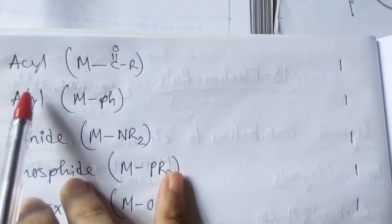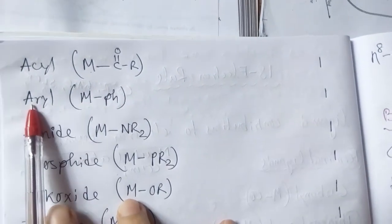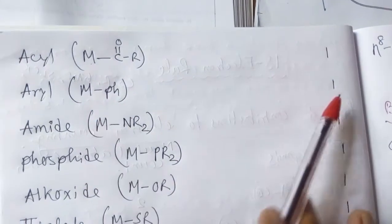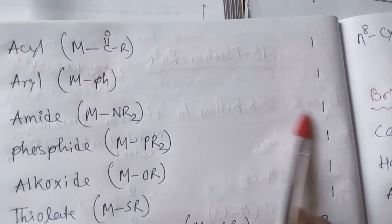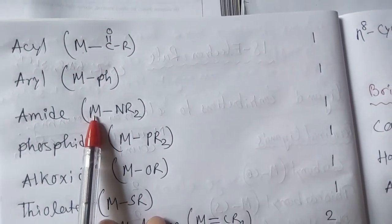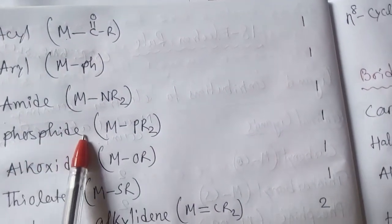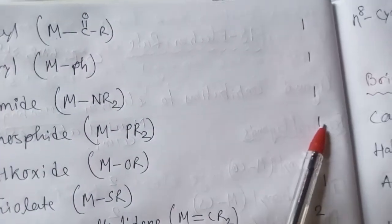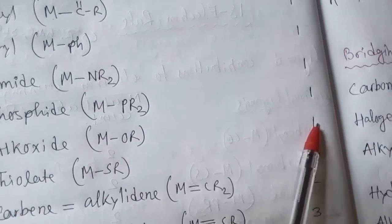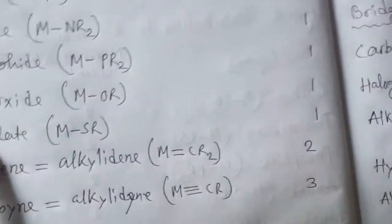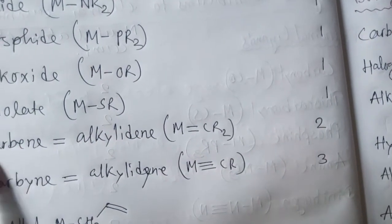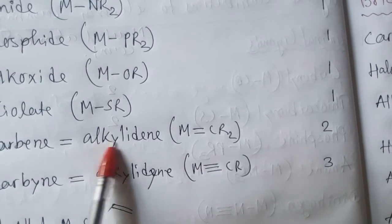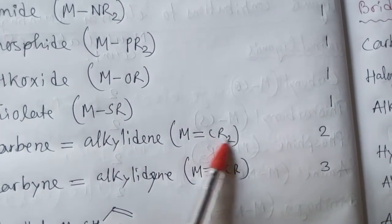Acyl is also one. Aryl is one. Amide is one. Phosphide is one. Alkoxide is also one. Thiolate is one. Carbene, that means alkylidene, contributes two electrons.